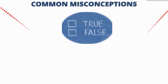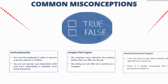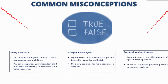Now let's tackle some common misconceptions for each program. For family sponsorship: you must be employed in order to sponsor a spouse, partner, or child. This is not the case — you have to show financial capability, but it doesn't mean you have to be employed at the time of submission. This has been a big challenge during COVID-19 with a lot of job loss. You can include a job offer letter, bank statement with savings, or an explanation letter with your action plan to support the person.